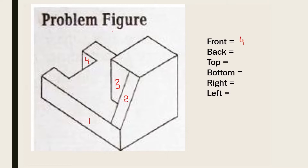Then the back. This full one from here to this full one, we have to take it as a single surface — so one. Then this one from the back, it's two. So the back side surfaces are one and two.